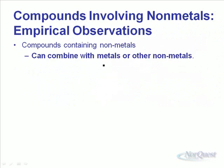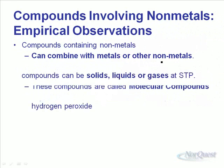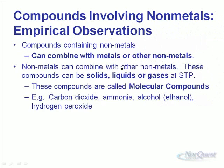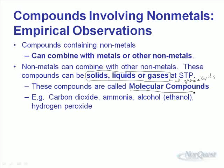For non-metals, it's a little different. They can combine with metals, or they can combine with other non-metals. Non-metal compounds can be solids, liquids, or gases at standard temperatures and pressures. So if you see something that's gaseous or liquid at room temperature and it's a compound, it has to be a non-metal or molecular compound. Examples include carbon dioxide, ammonia, drinking alcohol, and hydrogen peroxide — all molecular compounds, non-metals combined with other non-metals.